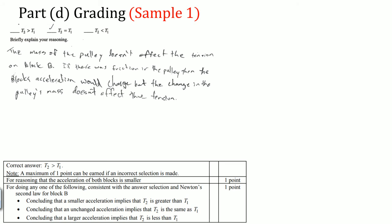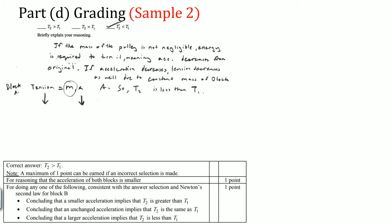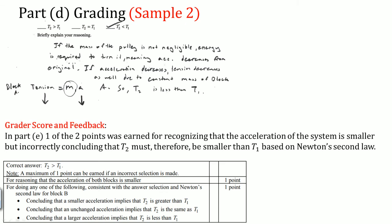One student made the wrong selection, writing that the mass of the pulley does not affect the tension of block B — that is incorrect and earns no points. Another student wrote T2 is less than T1, which is the wrong selection, but stated that the mass of the pulley is not negligible so energy is required to turn it, meaning acceleration would decrease. That reasoning earns a point for correctly identifying that system acceleration decreases. However, the conclusion that tension therefore decreases was wrong — if acceleration decreases, tension increases — so they did not earn the second point.